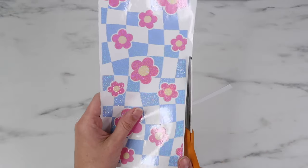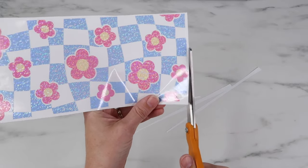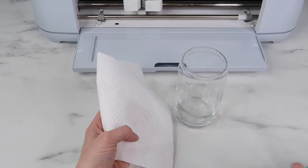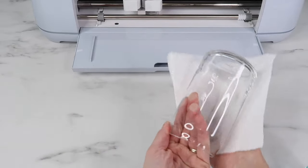I go in and trim this off a little bit more because it makes it easier to line it up on the glass. Before adding my vinyl, I go in and use rubbing alcohol over the glass. It really makes a difference in helping that vinyl stay and last longer.